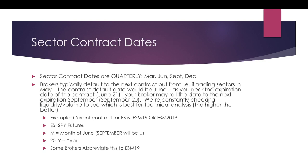Sector contract dates are quarterly: March, June, September, December. Brokers typically default to the next contract out front — if trading sectors in May, the contract default date would be June. As you near the expiration date — for us, June 21st, 2019 — your broker may roll that to the next expiration date, September 20th. We're constantly checking liquidity and volume to see which is best for technical analysis; the higher the liquidity and volume, the better. Most of us in the room are trading ESM19 or ESM 2019. ES stands for S&P futures, M stands for the month of June. September will change to U — it would be ESU19. Some brokers abbreviate this to ESM19.